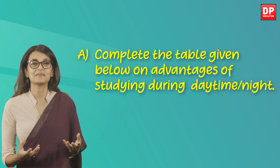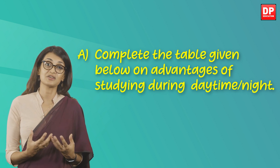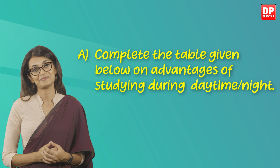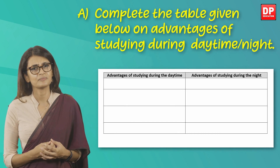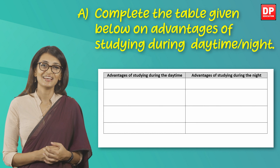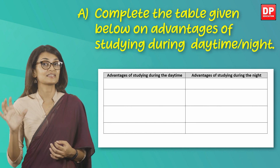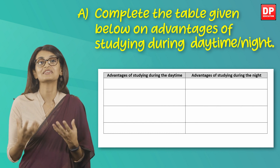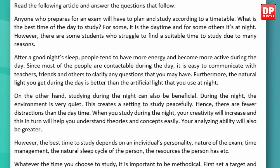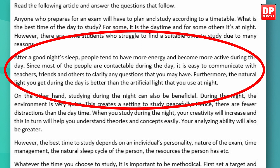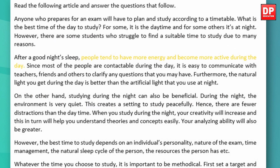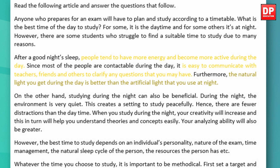When you look at the questions, you can use skimming and scanning to find your answers with ease. Let's look at question A: complete the table given below on advantages of studying during daytime and night. Let's look at the table and fill it out with appropriate answers. To do this, let's scan the article for the advantages of studying during the daytime. Even though the term 'advantages' is not found in the text, my eyes rest on the second paragraph.